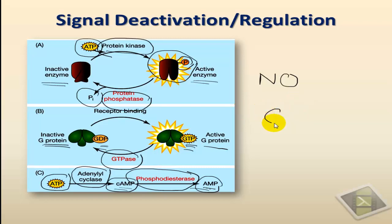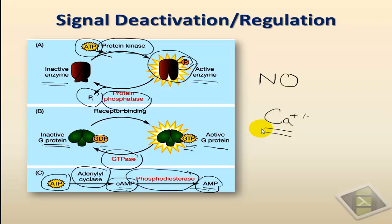Another example is that of calcium. When released under the effect of second messengers, it can by itself act as a second messenger. One way of deactivating calcium is by pumping it back into its storage organelle, which is usually the endoplasmic reticulum. By decreasing the concentration, we decrease the effect, and that's how we deactivate the signals.